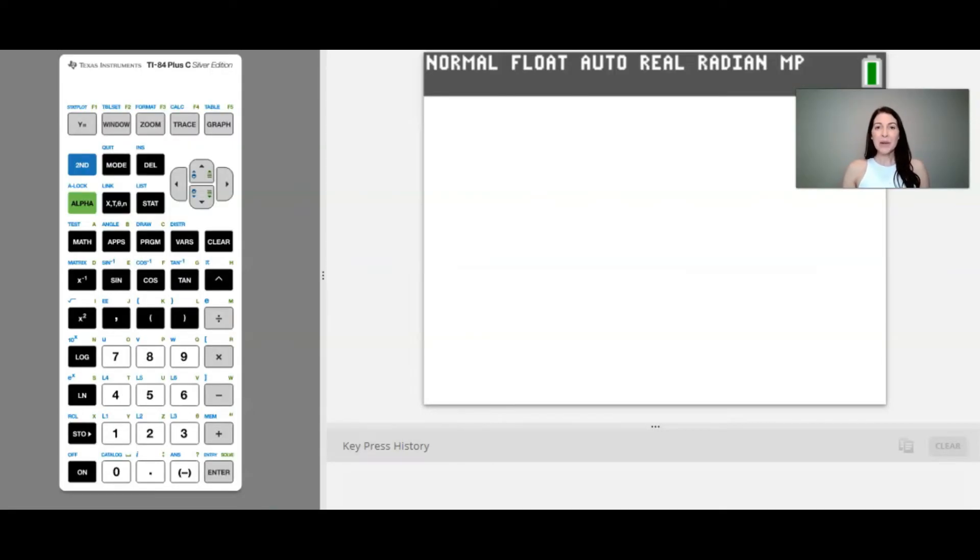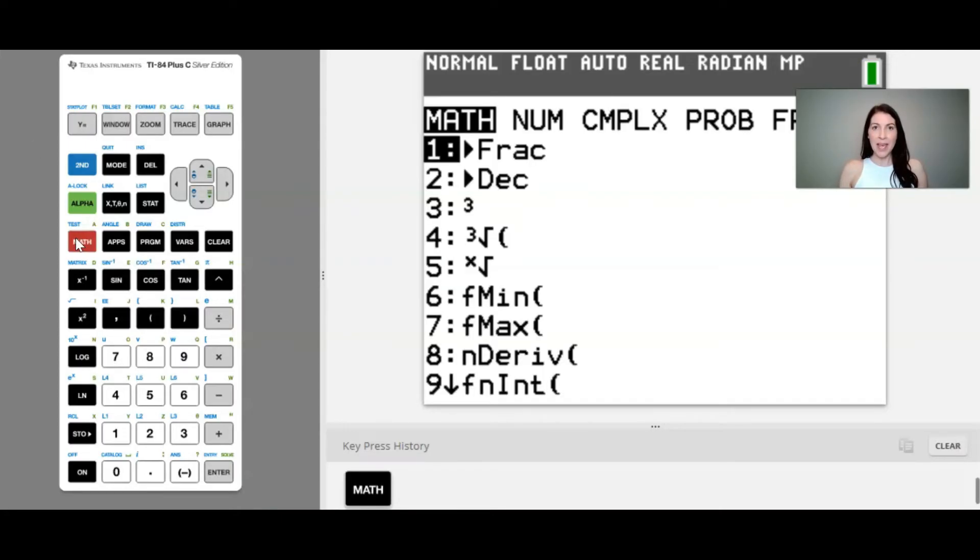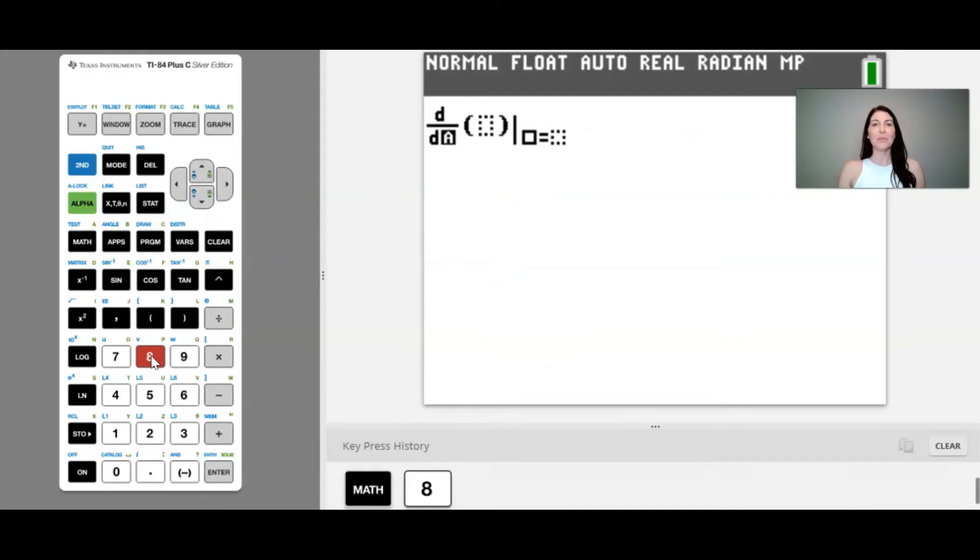So the first thing we would need to do is we would want to press the math button. And because we're finding a derivative, we're going to go down to the eighth option. You can either use the arrow here to go down or you can simply just press the number eight and it'll pull up the derivative option.